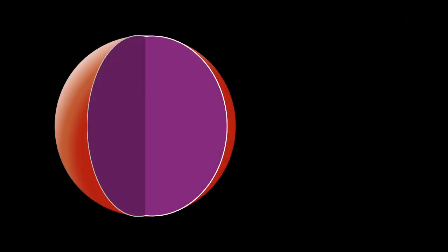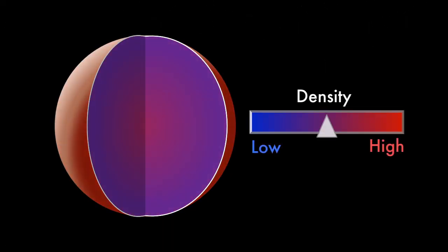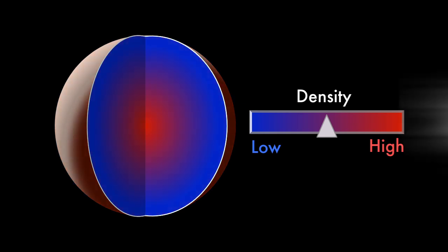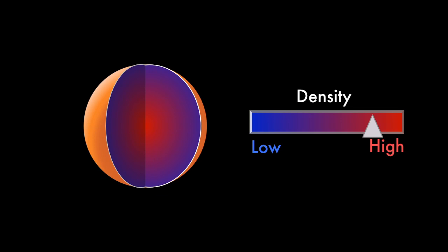When planets form, the lighter materials rise, and denser ones sink to the core. Remove the outer, lighter layers, and you're left with a denser planet once what's left cools off.